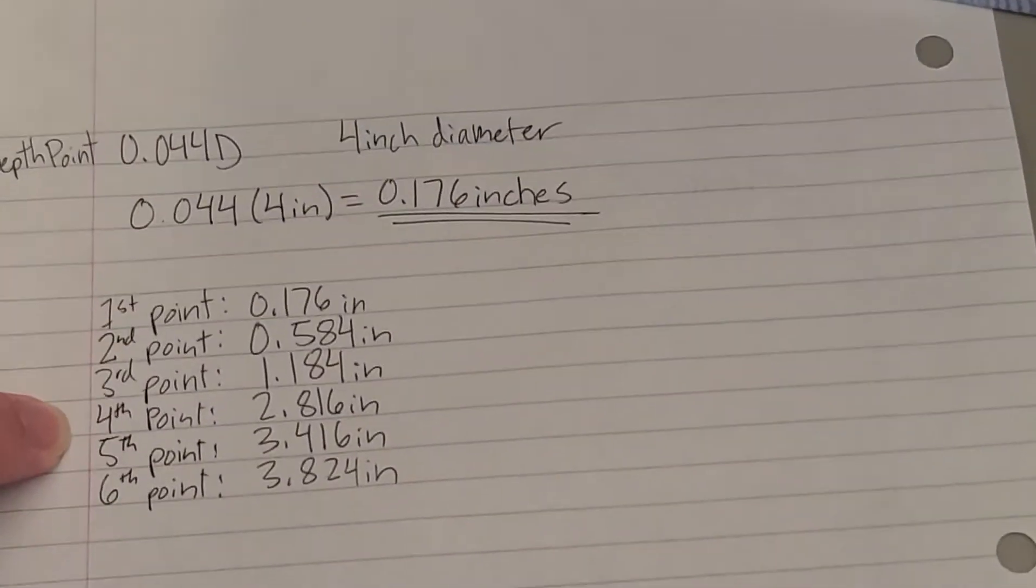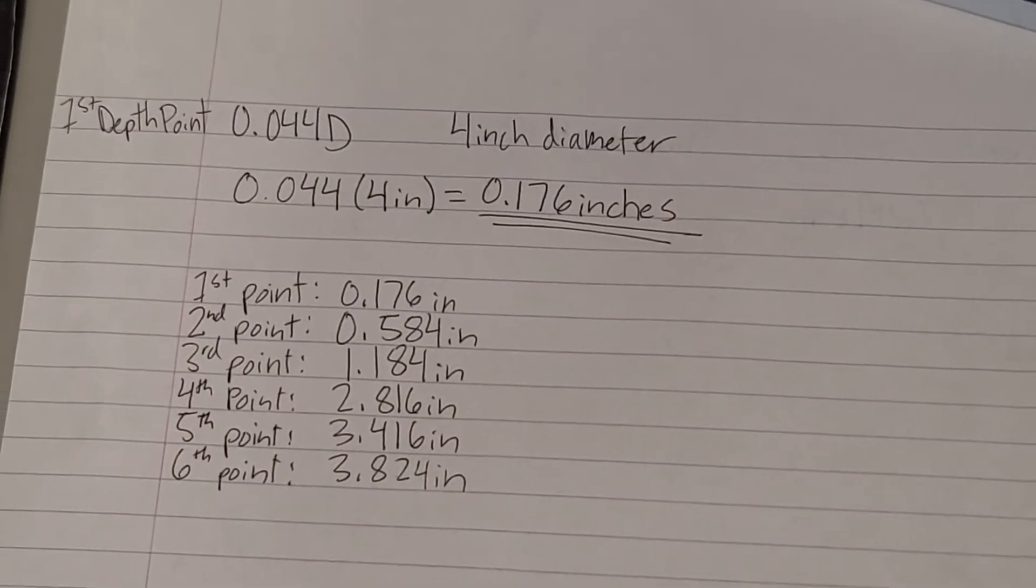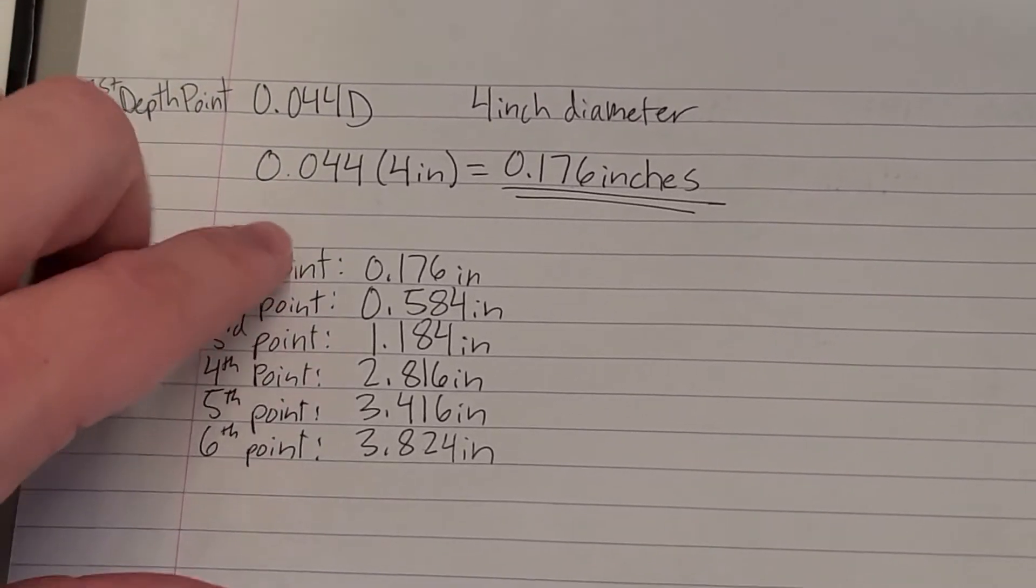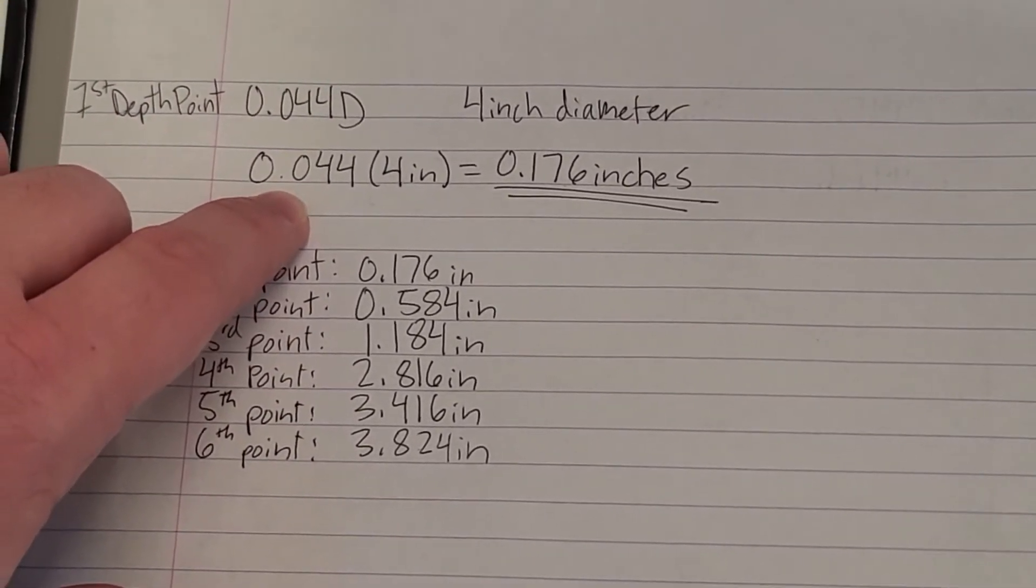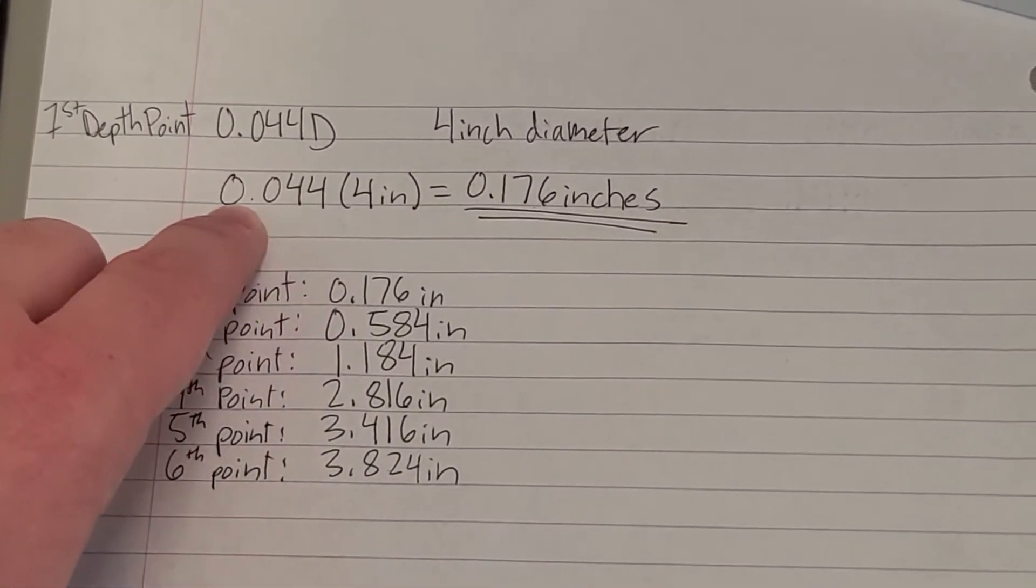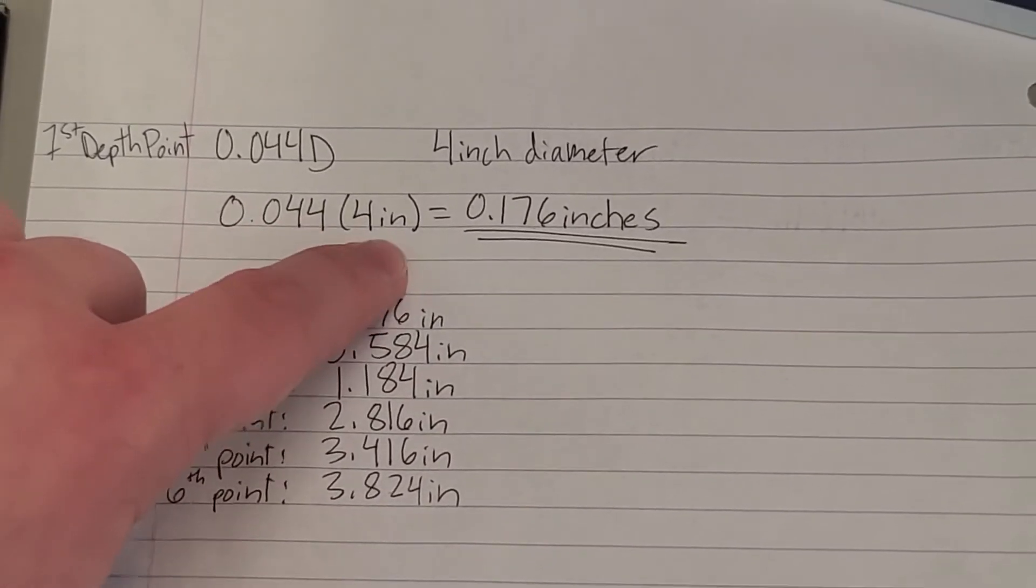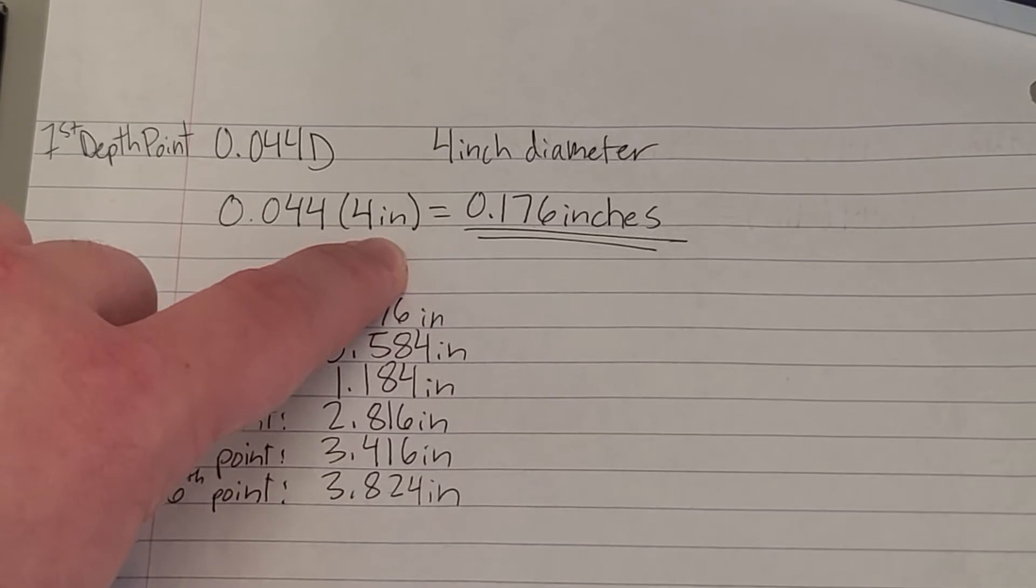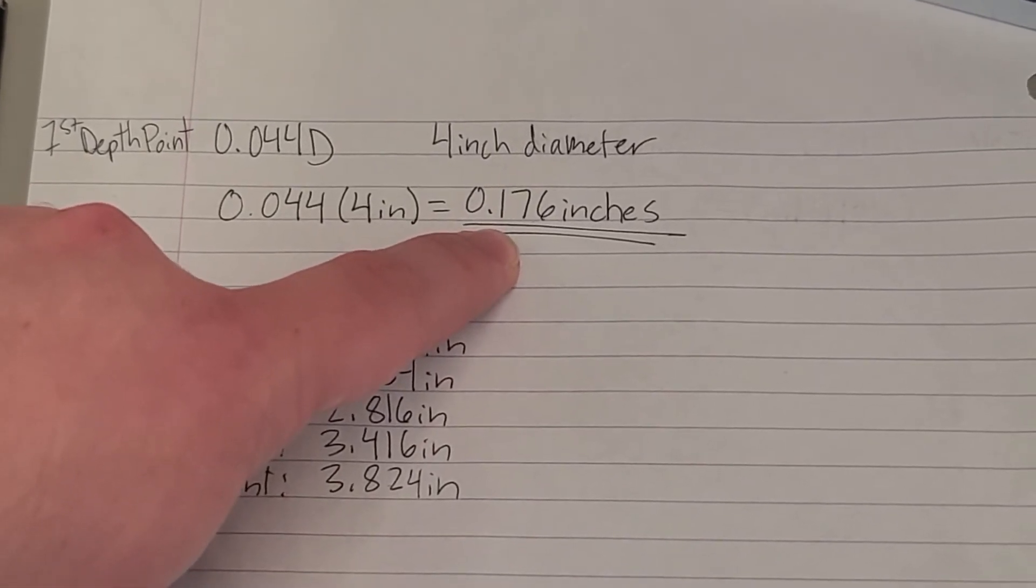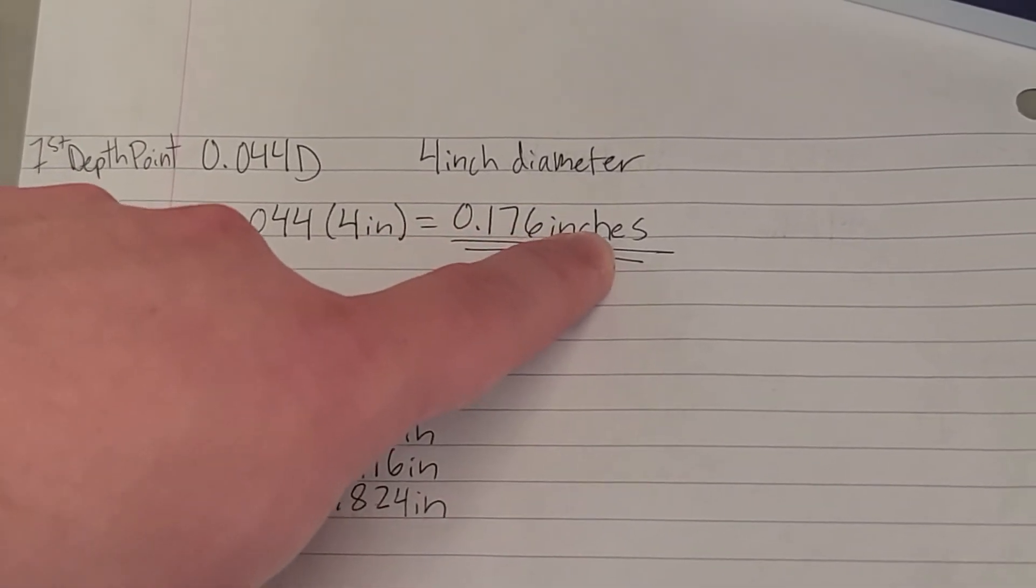Here we have some of the calculations for our duct specifically. Today we're using a 4-inch diameter duct, and we used the first point of the duct traverse to show how to calculate it. Here we see that 0.044 times our 4-inch duct diameter gives us a first point in the duct traverse of 0.176 inches.